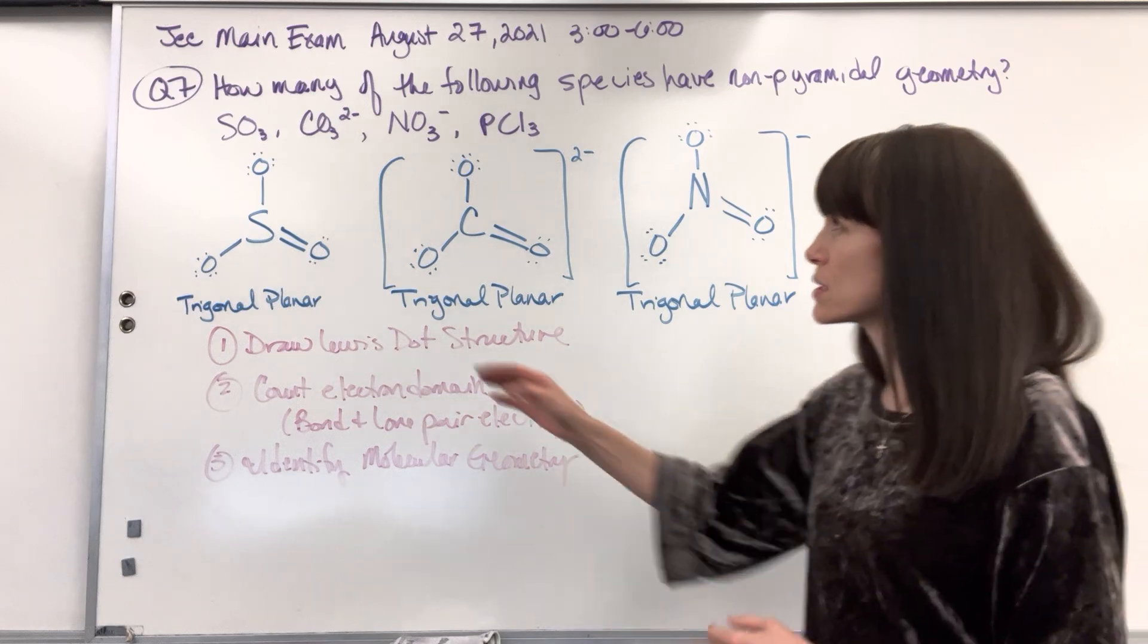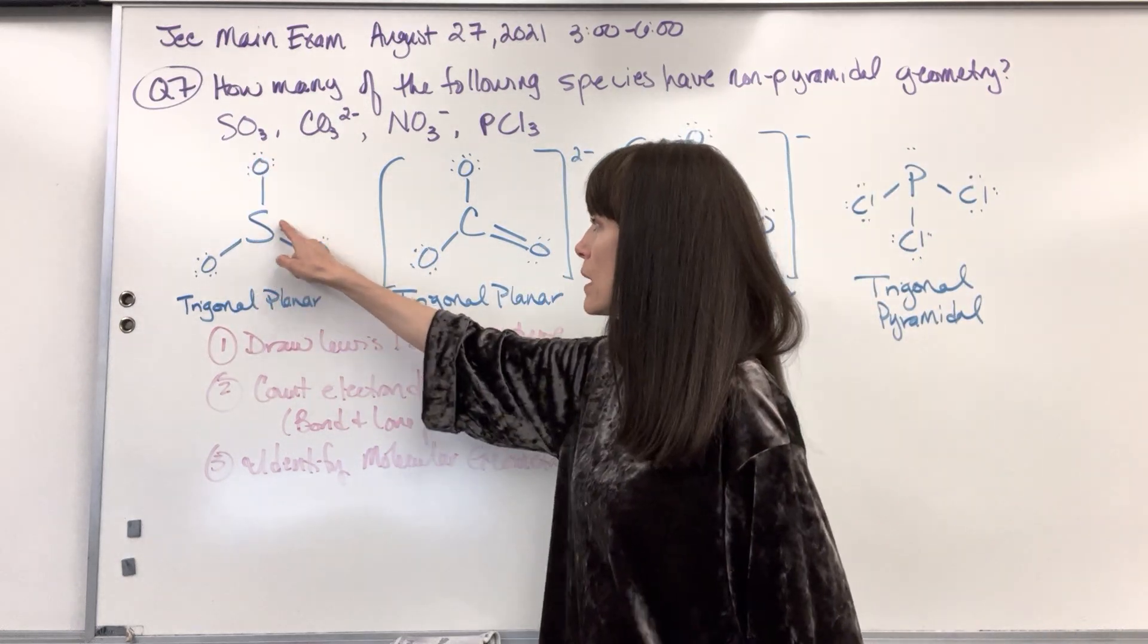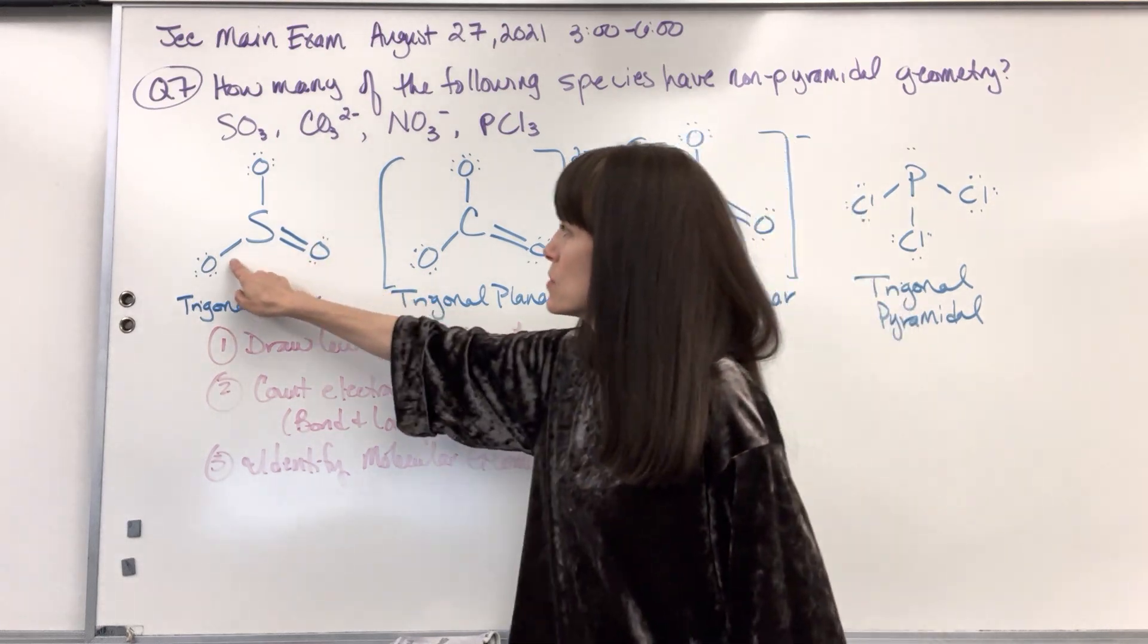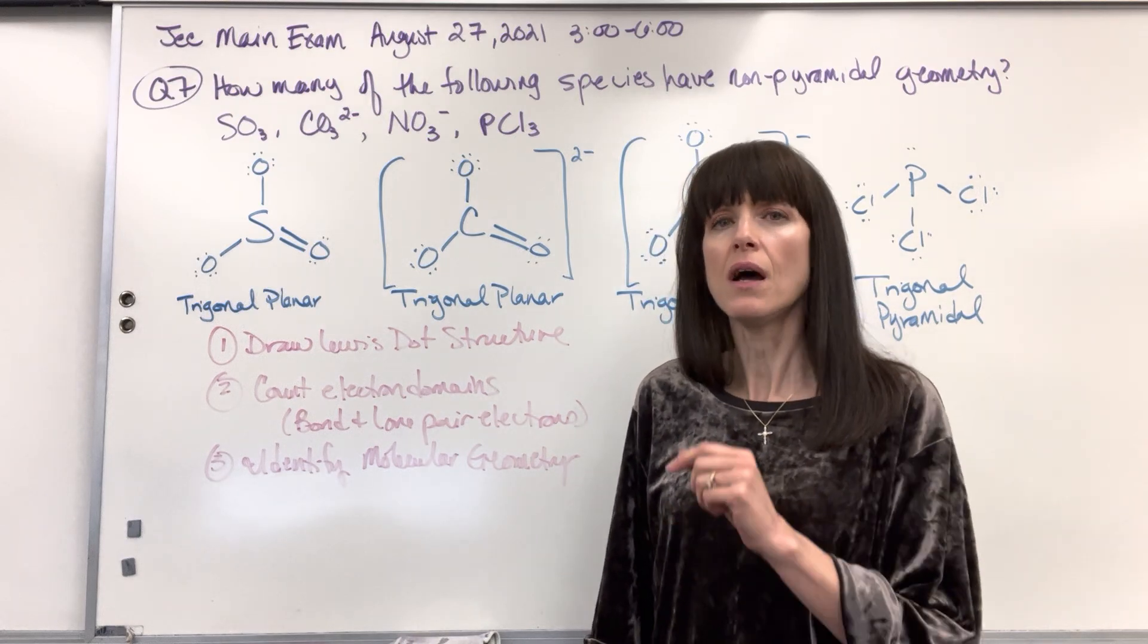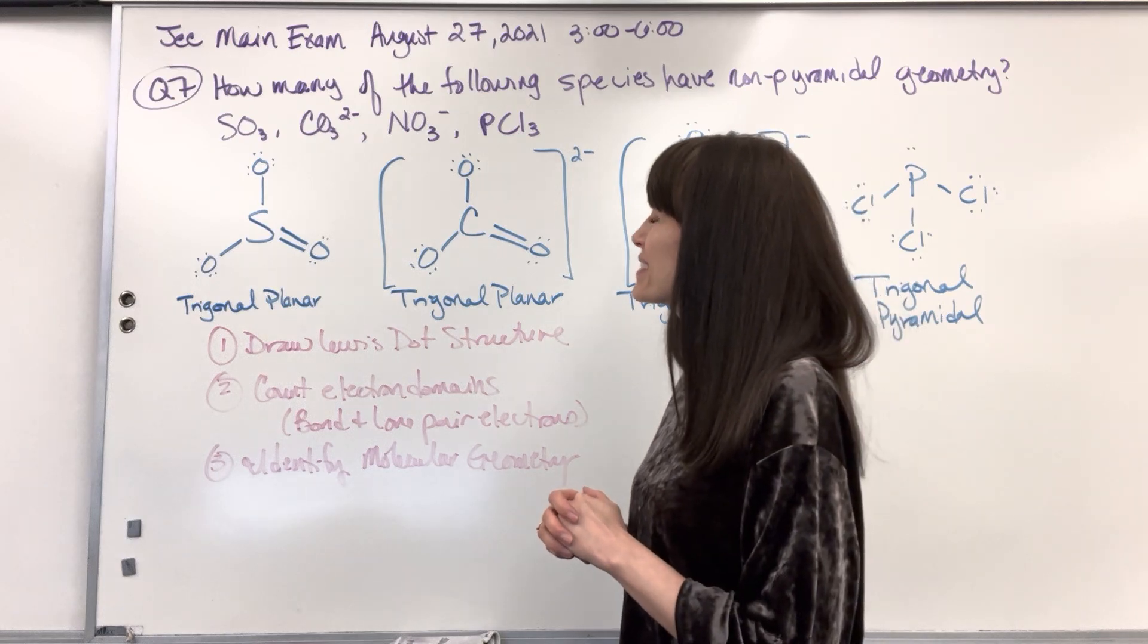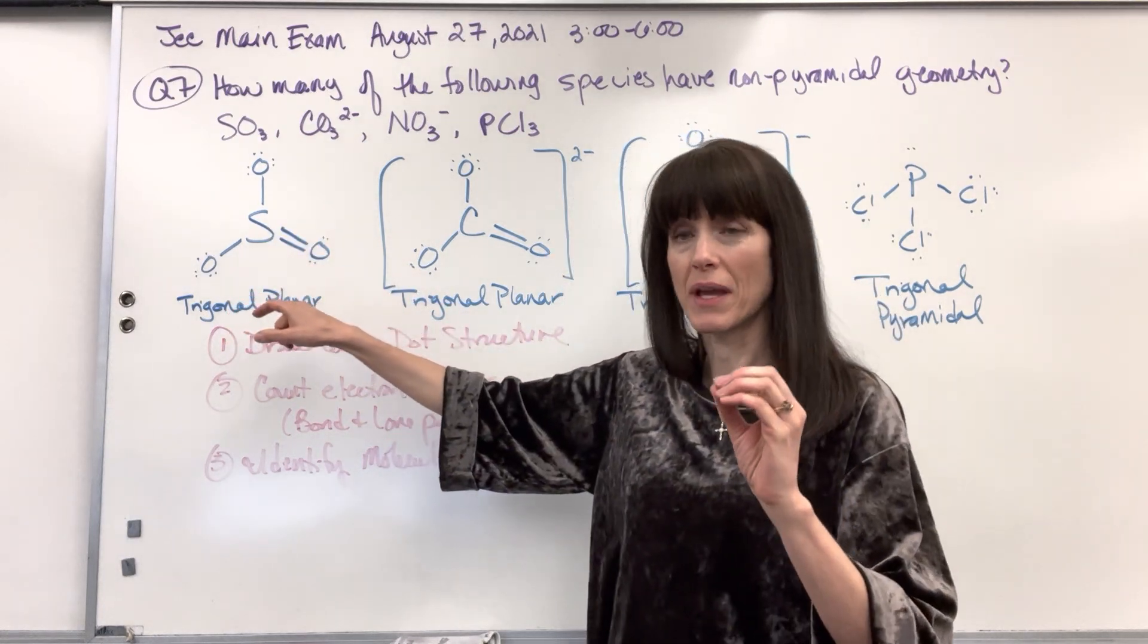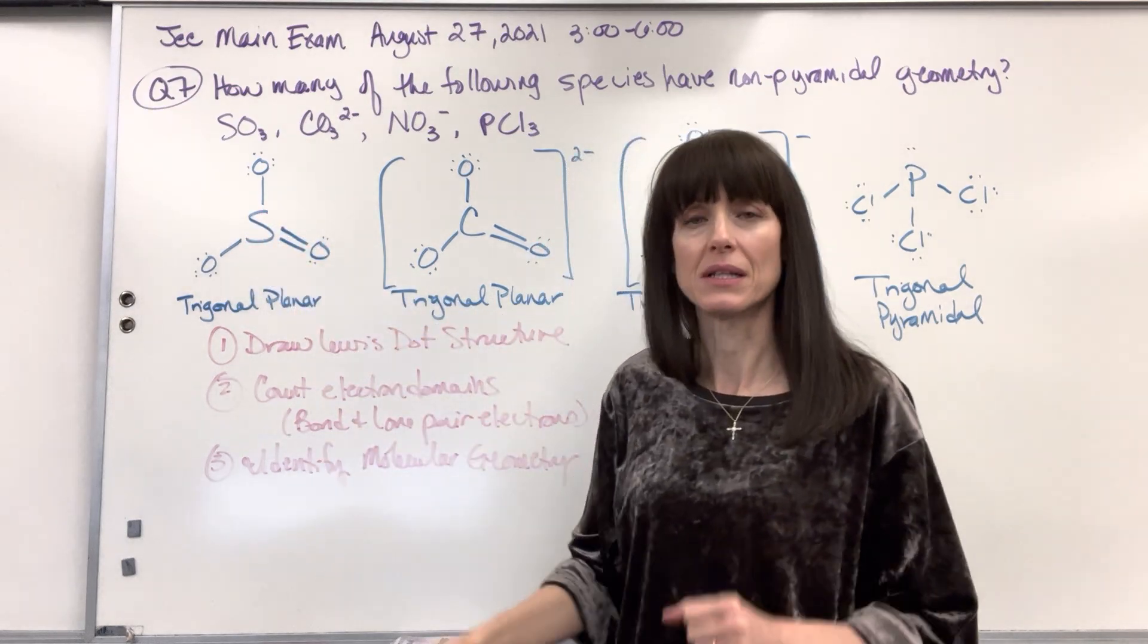So let's draw our Lewis dot structures. Sulfur has six valence electrons. It shares two electrons with two electrons shared by the oxygen. These two bonds though are coordinate covalent bonds. If you need help with that, I'll post a link up above to help you with coordinate covalent bonds. So we have now, let's count the electron domains. One, two, three, and they're all bonded.